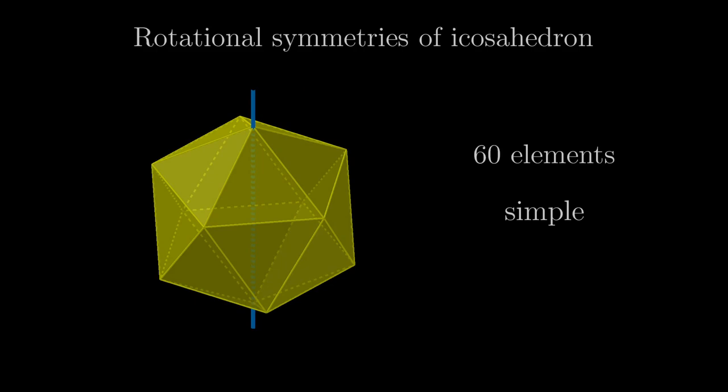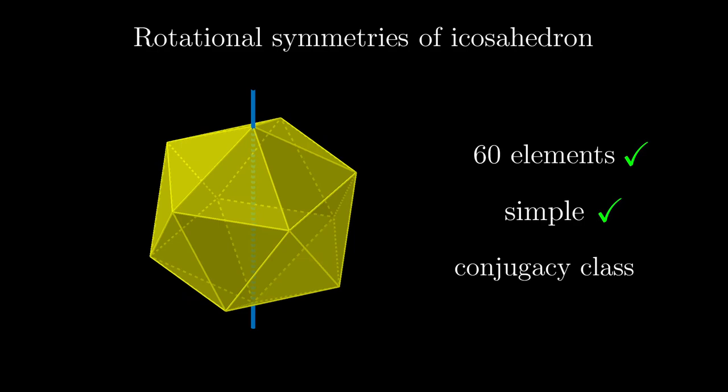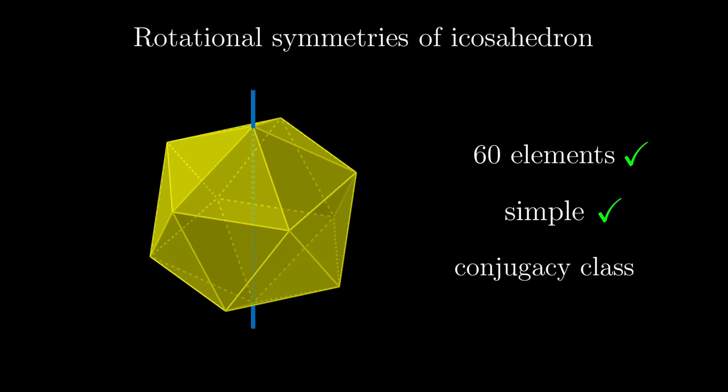We have come a long way, but we have finally understood why this group has 60 symmetries, and why this group is simple. We have also introduced the concept of conjugacy classes along the way.